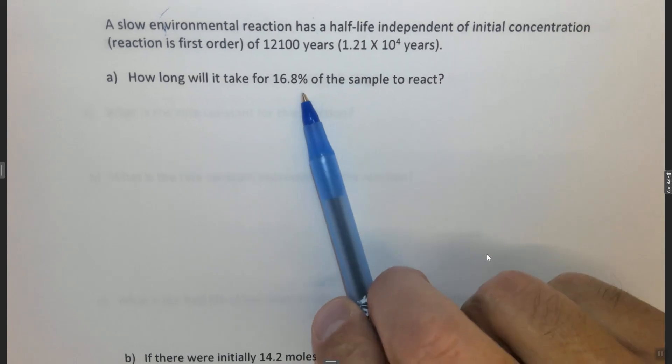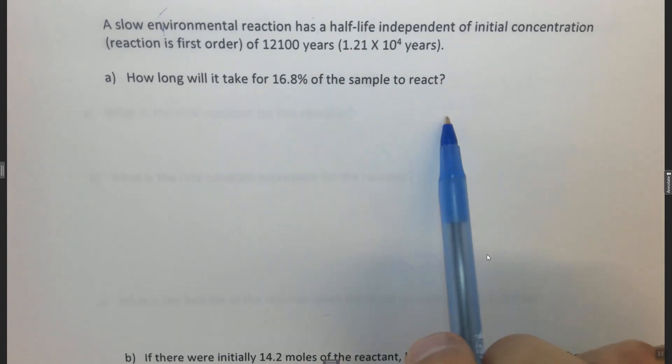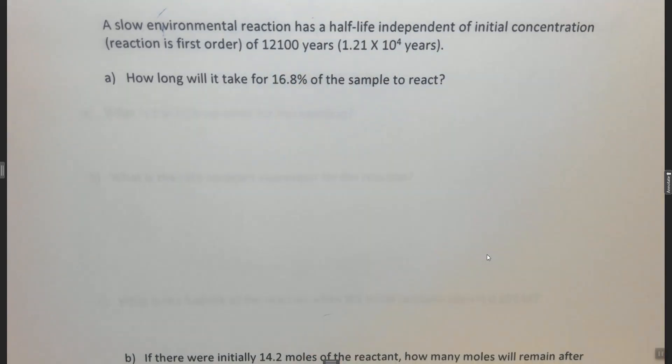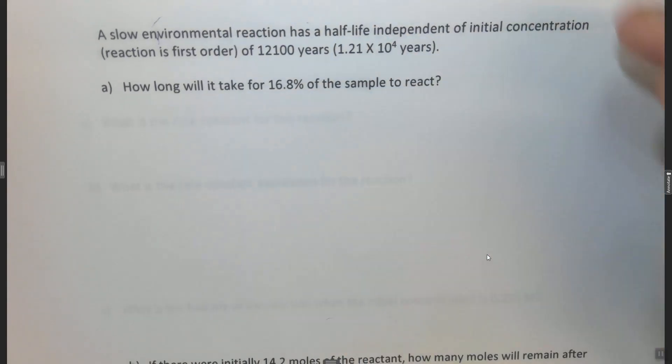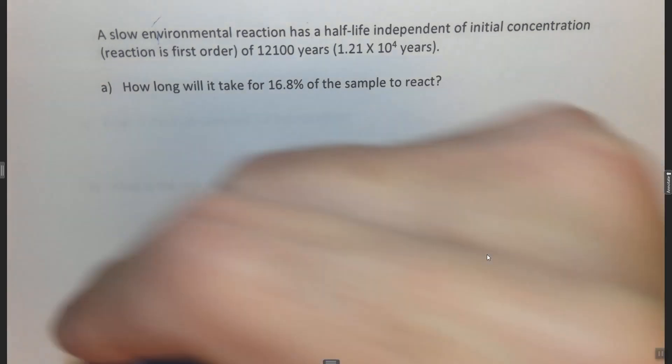If it was one or two half-lives, if it was how long for 50% of the sample to react, the answer would be 12,100 years. But unfortunately this is not an exact half-life, so you can't just find some proportionality. You have to use the integrated first-order rate law, which we've used in a previous question.